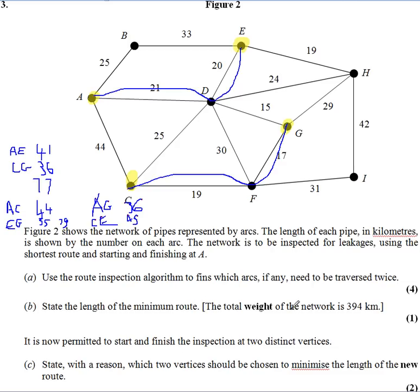State the minimum length of the route. If the total weight of the network is 394, we've added 77 to that. So that gives us a total of 471.